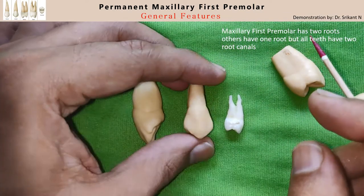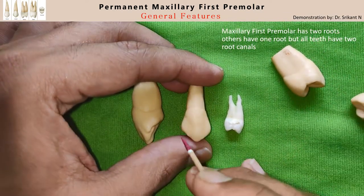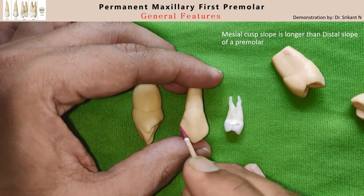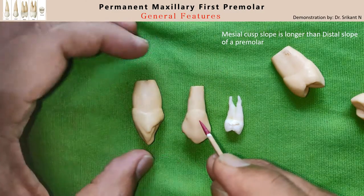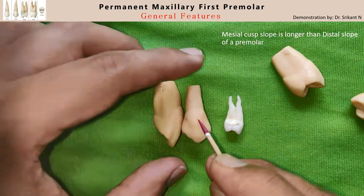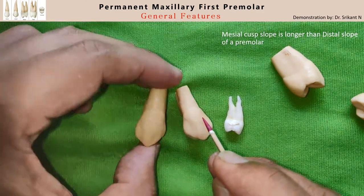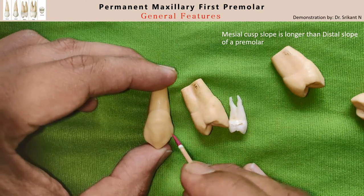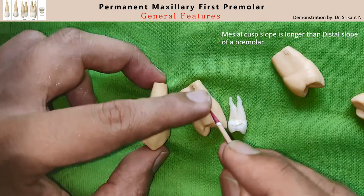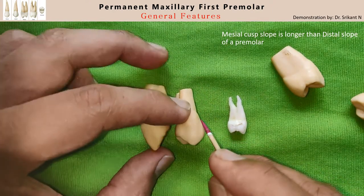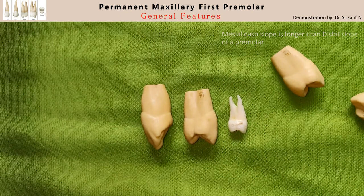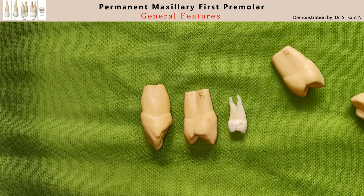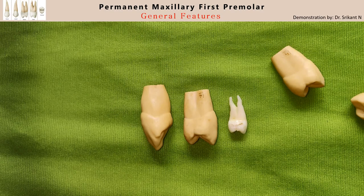When you look at the tooth from the buccal aspect, the mesial slope is longer than the distal slope. This configuration is opposite to that of a canine, in which the distal slope is longer than the mesial slope. In the next video we shall describe the buccal aspect of the maxillary first premolar.